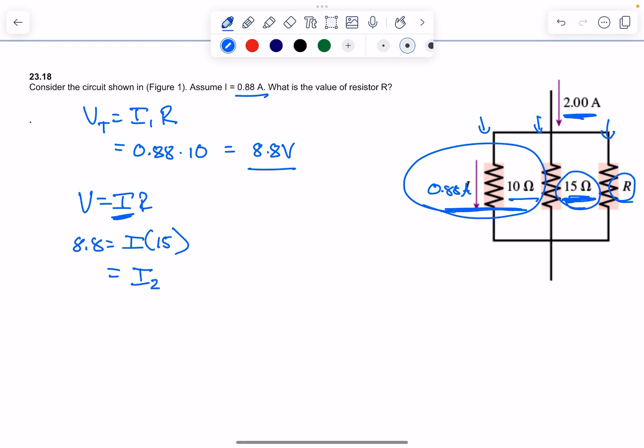All right? I know I1 is 0.88. I can solve for I2, and we know the total amperage.